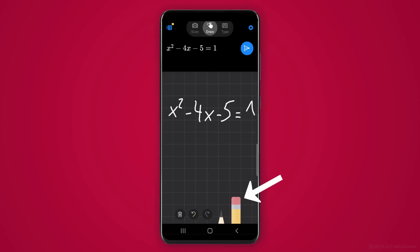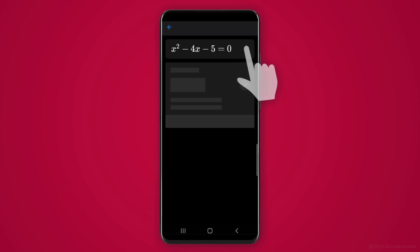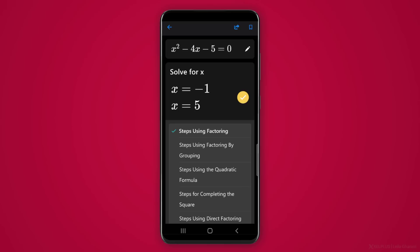You can also use the eraser in case you make a mistake, and then select the pen again to correct it. Then click the blue arrow button to solve it. And there it is.